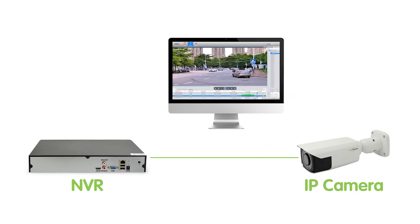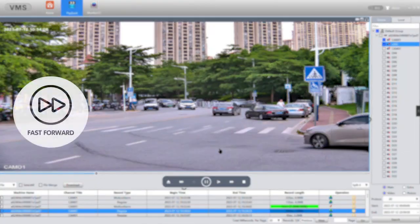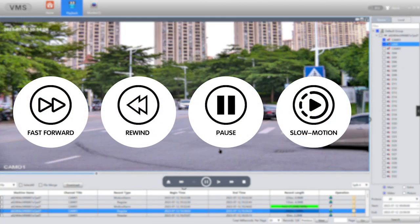NVR playback involves assessing and analyzing previously recorded video content, allowing for in-depth review of events. The significance of various playback options — including fast-forward, rewind, pause, and slow-motion — cannot be overstated. Fast-forward and rewind functions enable swift navigation through footage, saving time while seeking specific moments. Pausing aids in capturing details, and slow-motion playback is valuable for meticulous examination of intricate scenes. These options collectively empower users to extract comprehensive insights from recorded footage. Some advanced NVR systems even offer motion tracking, automatically focusing on moving objects during playback.